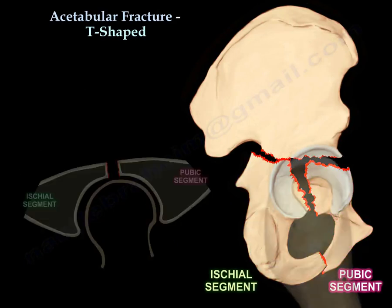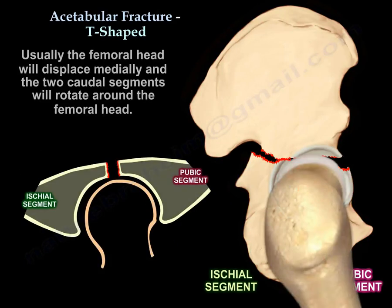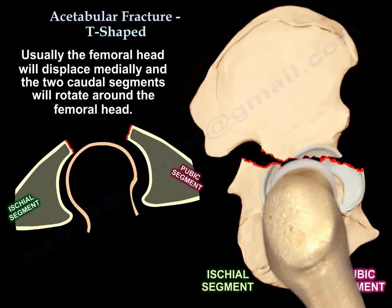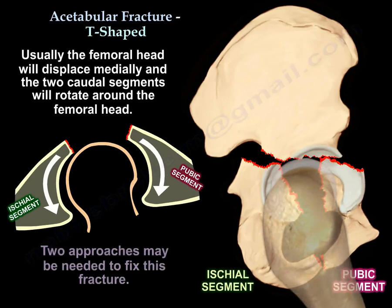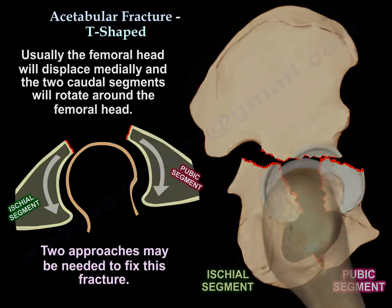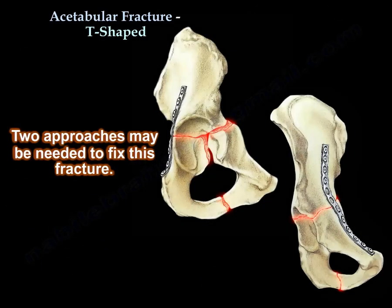Usually, the femoral head will displace medially and the two caudal segments — the anterior and the posterior column segments — will rotate around the head. That is why two surgical approaches may be needed to fix this fracture.